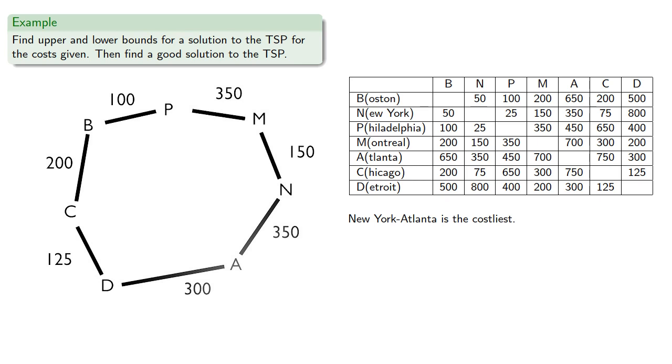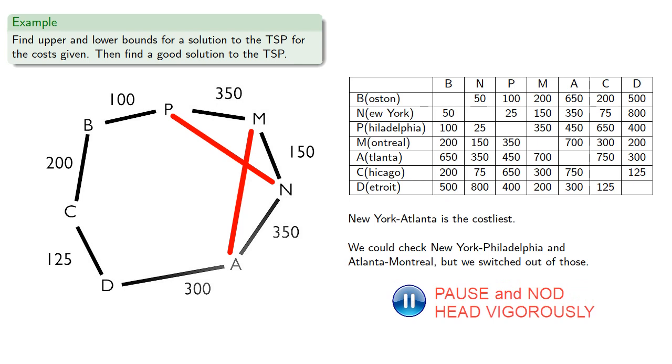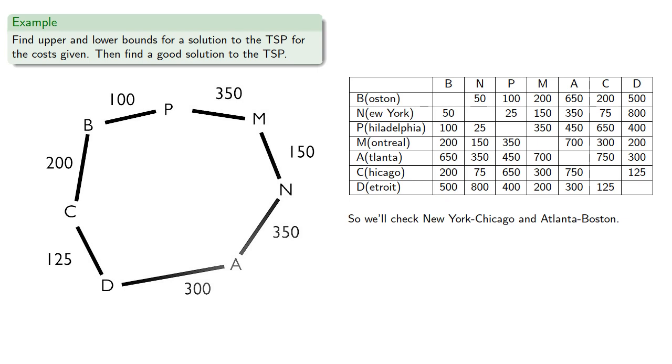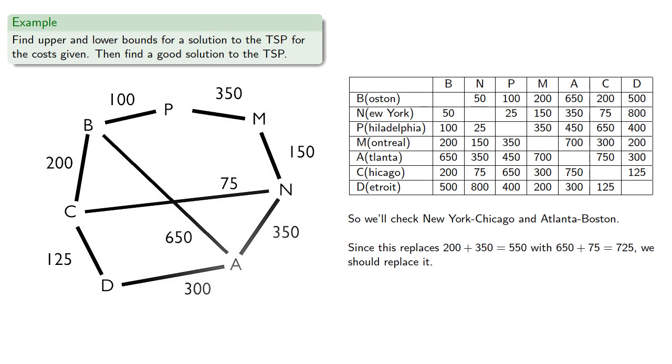New York-Atlanta is the costliest, and again we could check the earlier edges New York-Philadelphia and Atlanta-Montreal, but we switched out of those. We could also check New York-Boston and Atlanta-Philadelphia, but we just switched out of those. So we'll check New York-Chicago and Atlanta-Boston. Since this replaces 550 with 725, we should replace it if we want to increase the cost. But since we don't, we'll leave it alone.